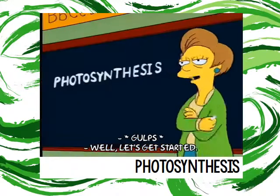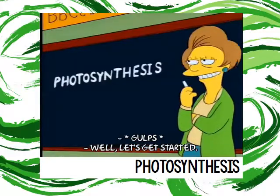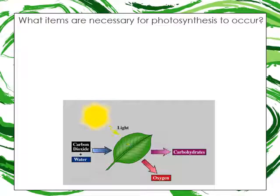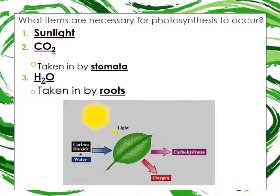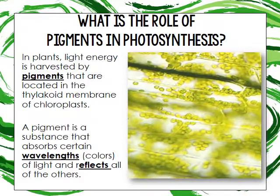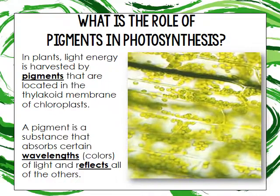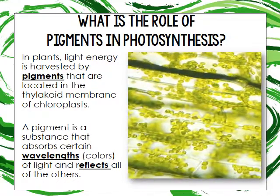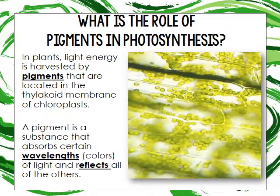For photosynthesis to occur, you need sunlight, carbon dioxide — taken in by the stomata of the plant — and water, taken in by the roots. So two different locations are needed. In plants, light energy is harvested by pigments located in the thylakoid membranes of the chloroplast. A pigment is a substance that can absorb a certain wavelength or color of light and reflects all other colors.